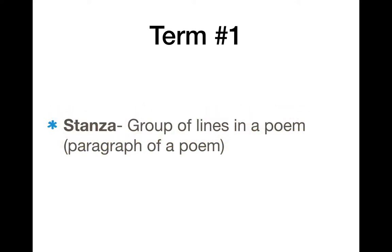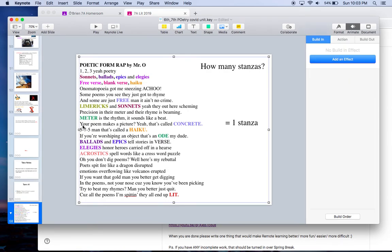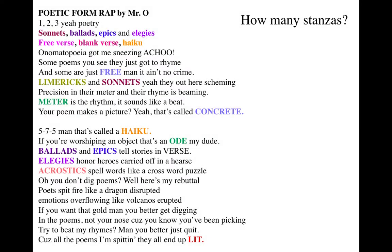Term number one is a stanza. Go ahead and hit pause and copy down the definition. A stanza is a group of lines in a poem. Another way to think about it is it's kind of like a paragraph, but in a poem. So a stanza is a poem paragraph — that's the quick, easy definition. For example, how many stanzas is the rap I just performed? Well, as you can see, it's just one stanza. A stanza is just a grouping of lines, kind of like how an essay or a book uses paragraphs — a poem uses something called a stanza.